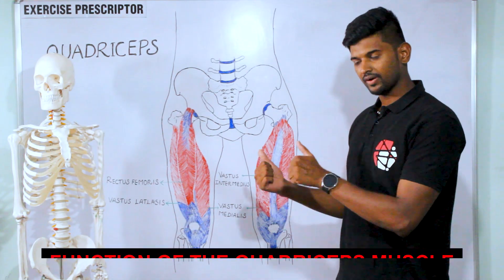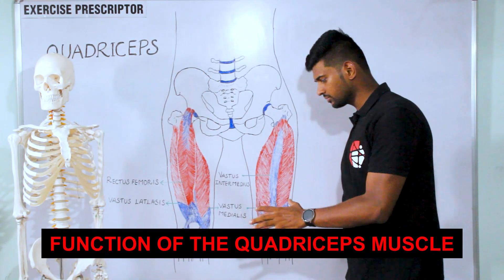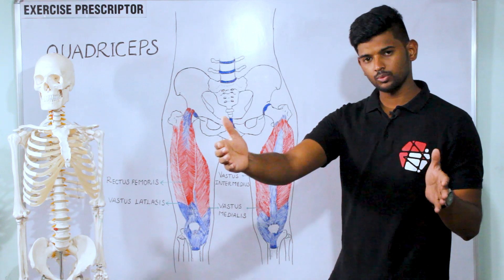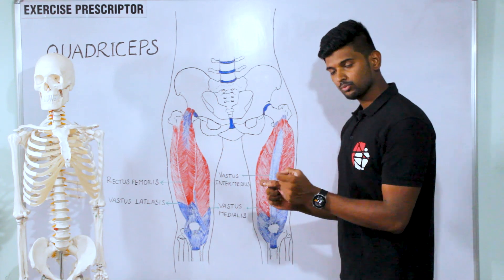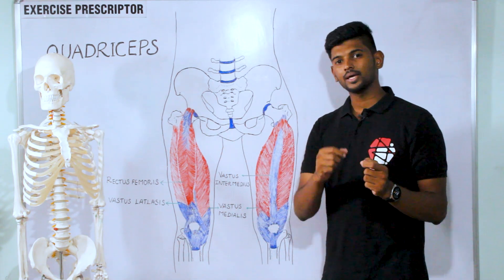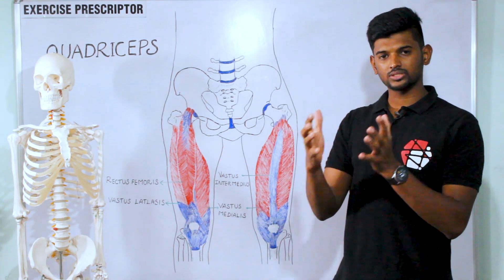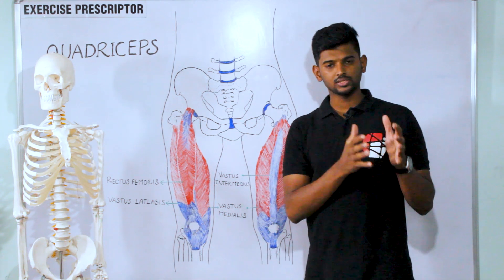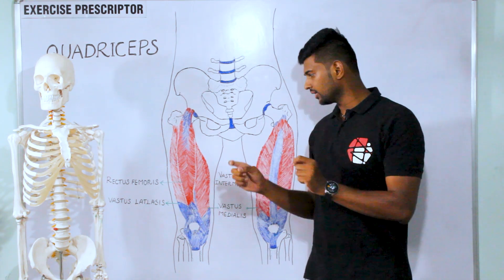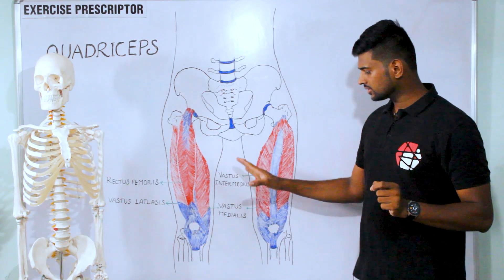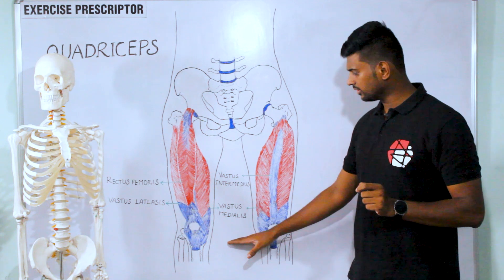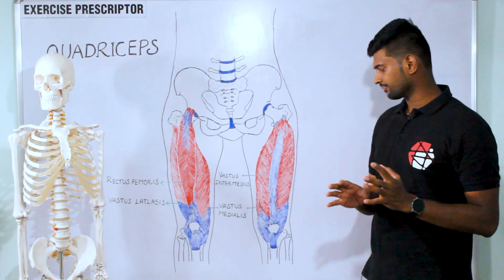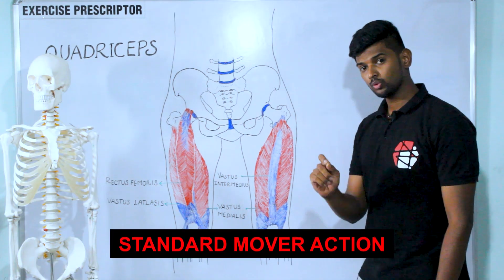Next, we'll move into the function of the quadriceps muscle. I always categorize function into standard mover action and reverse mover action. Standard mover action is when the insertion moves towards the origin. Reverse mover action is when the origin moves towards the insertion. The insertion is the distal attachment and the origin is the proximal attachment.